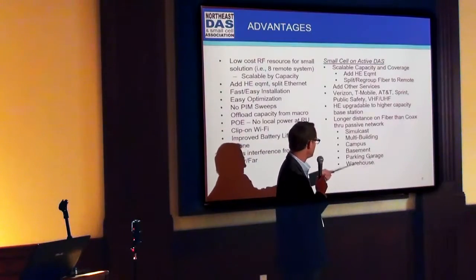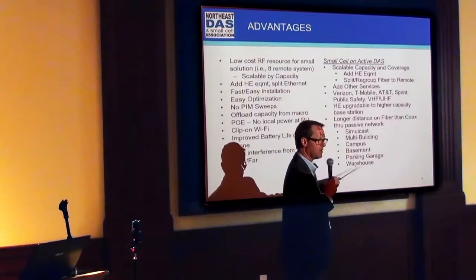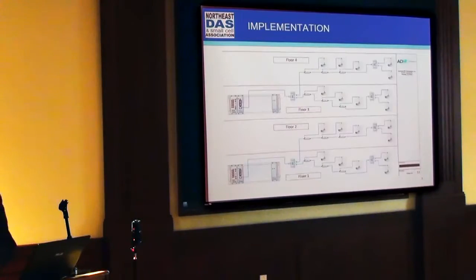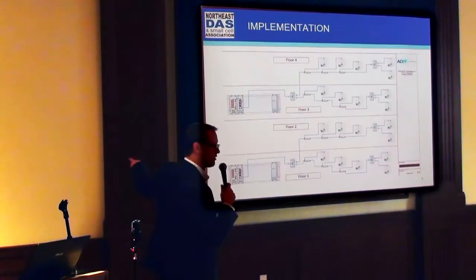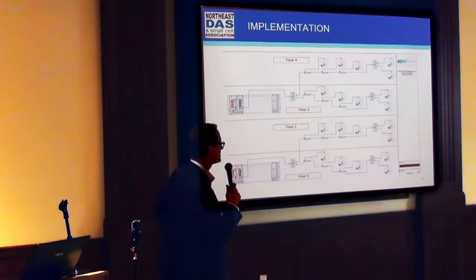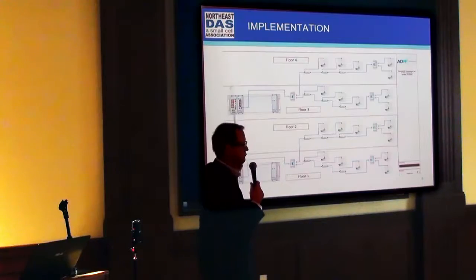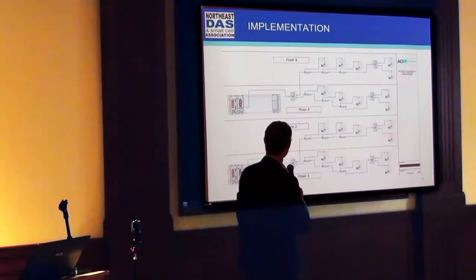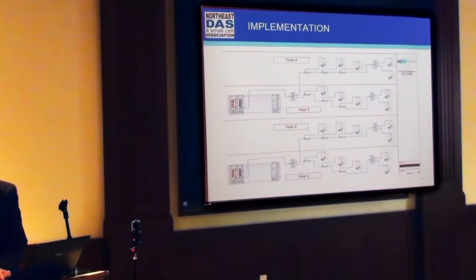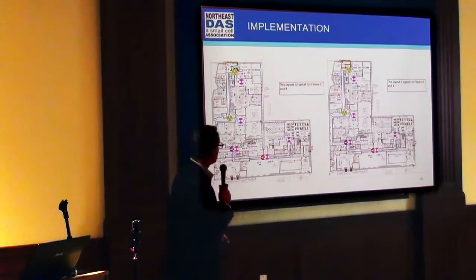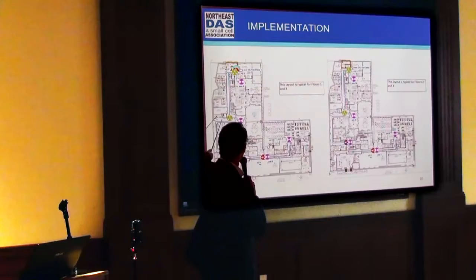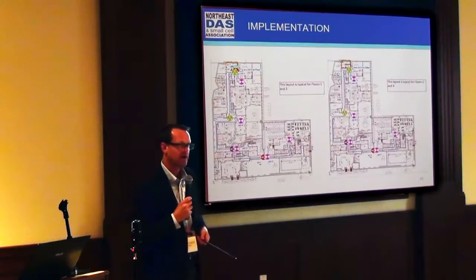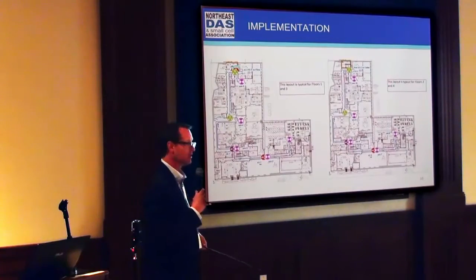That allows you to simulcast into multi-buildings, campus environments, basements, parking garages, and warehouses. In terms of implementation, once you get your head-end placed and add your RF services, you've got your remotes running like a regular DAS — into a splitter, directional couplers, antennas, with drop points on different floors. Looking at the coverage pattern, you'd have coverage out of those remote points to cover the various floors. Basically, small cells and Spider Cloud are very interoperable with traditional DAS and can co-exist at the same time.